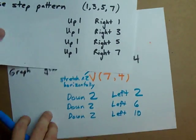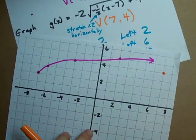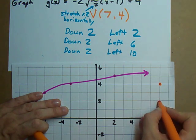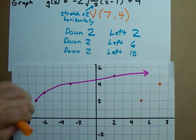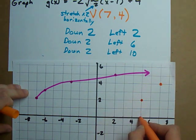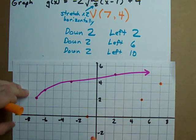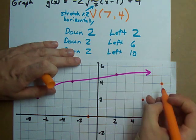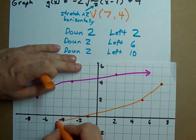How about that? So whip this out again and follow your new step pattern. We've got to go down two left two. Down two left two. Down two left six. Down one two left one two three four five six. Down two left ten. Probably not going to have room for that. And draw a curve through those points.